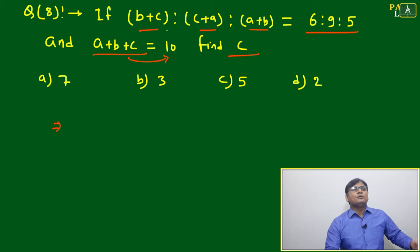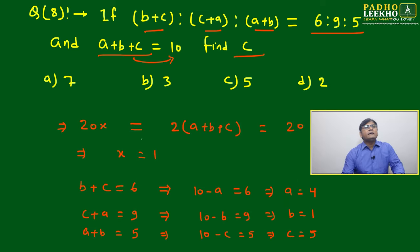What we'll do is just make it sum: (b+c) + (c+a) + (a+b). We have seen like this - ratio is given and sum is also given.